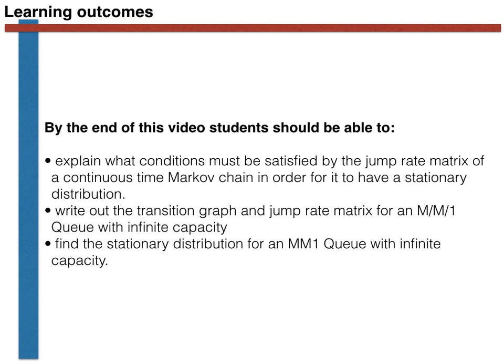With that duly noted, I will finish. You should now be able to explain what conditions must be satisfied by the jump rate matrix of a continuous time Markov chain for it to have a stationary distribution, write out the transition graph and jump rate matrix for an MM1Q with infinite capacity, and find the stationary distribution for an MM1Q with infinite capacity. There are programming exercises and written exercises that will take you through the derivation for a queue with finite length. Thank you for your attention.